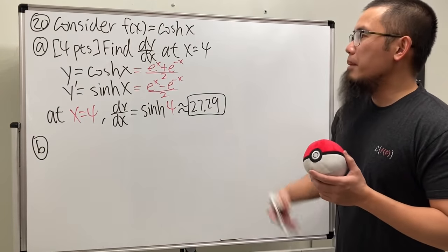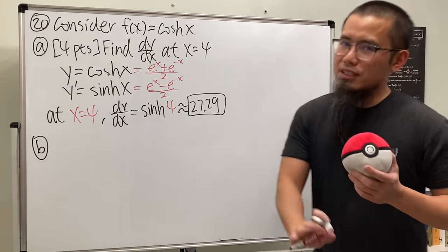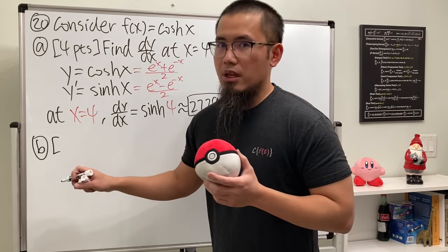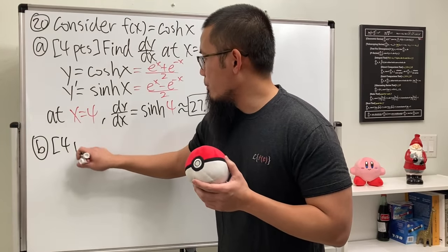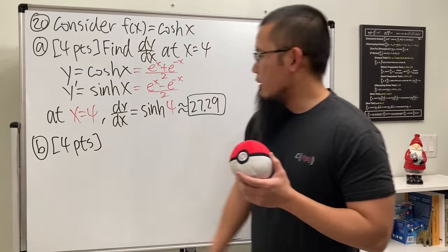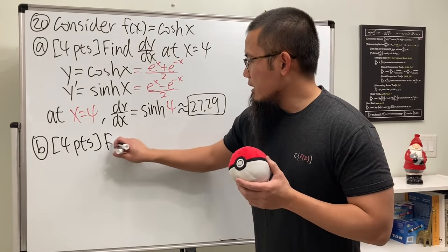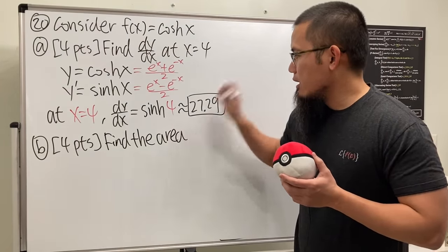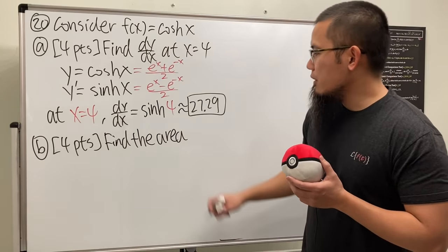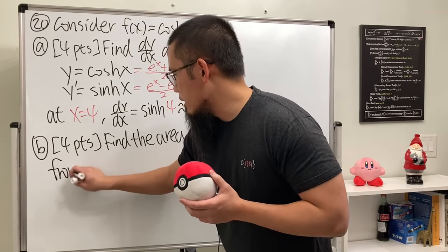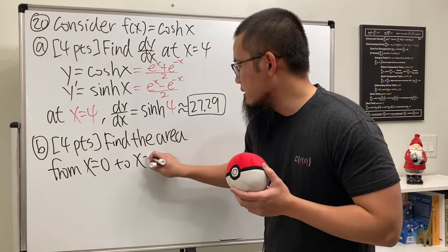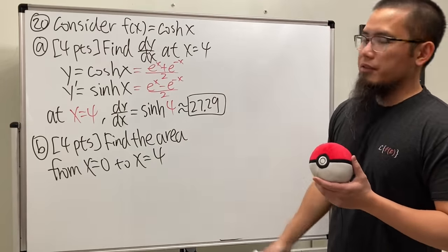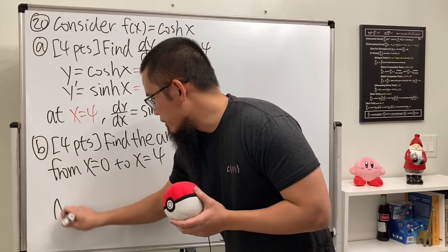Let's move on to Part B. Part B, another 4 points. We're going to find the area under the curve from x is equal to 0 to x is equal to 4.